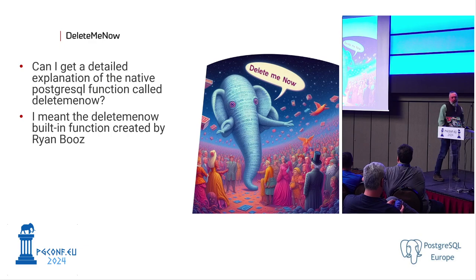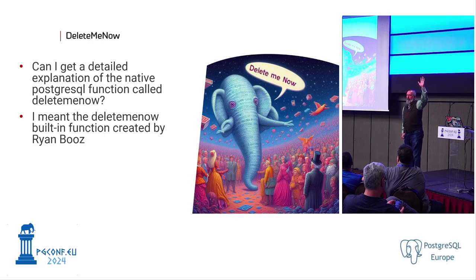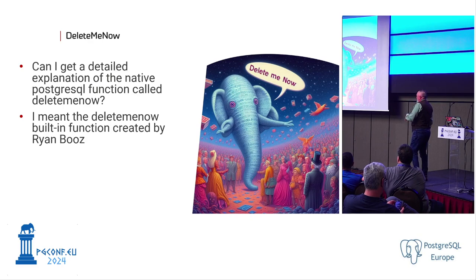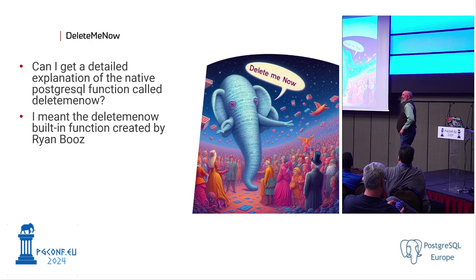One of the prompts I gave was: 'I would like a detailed explanation of the native Postgres SQL function called DeleteMeNow.' Who's heard of the native Postgres function called DeleteMeNow? I hope no one, because I made it up. There isn't one. And then when it didn't give me the answer I wanted, I said, 'I meant the DeleteMeNow function that was created by Ryan Booz,' basically feeding a little bit of reality with my fantasy to see what I could do.